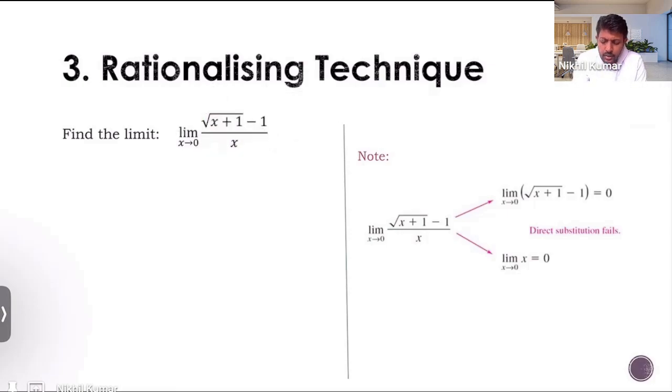As the name suggests, we are going to rationalize either the numerator or the denominator depending on the question. Now, in this question, we have a function, let's say f of x. This is our function f of x. And we can see that the numerator needs rationalizing because there is a square root sign in the numerator. Let's try rationalizing f of x and see what we are getting.